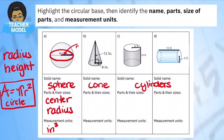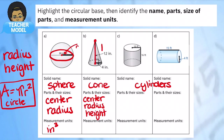For a cone, you're going to need the center to help find the radius, and you're also going to need the height. The height goes from the tippy tip down to the base. From the center of the circular base to the edge of that circle is your radius.